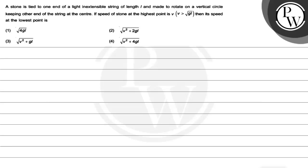If a stone is tied to one end of a light inextensible string of length L, we have to rotate on a vertical circle keeping other end of the string at the center. If the speed of a stone at the highest point is V, where V is greater than square root of gL, then its speed at the lowest point is what we have to find.